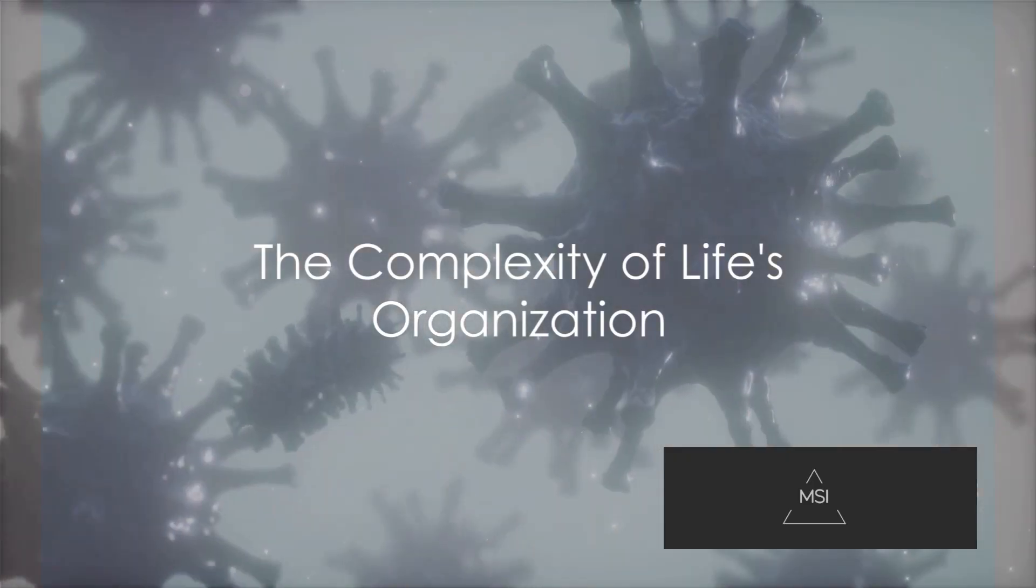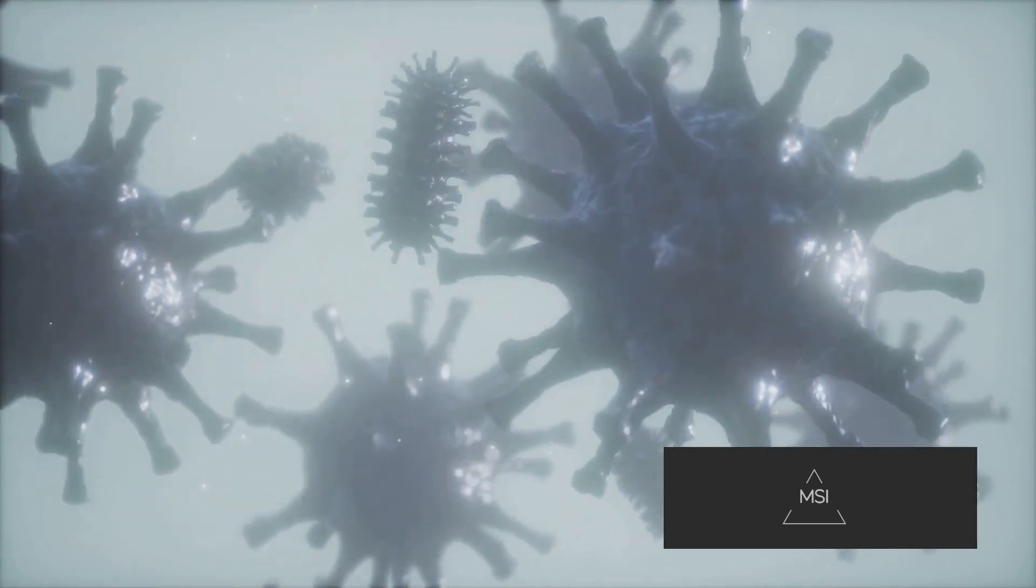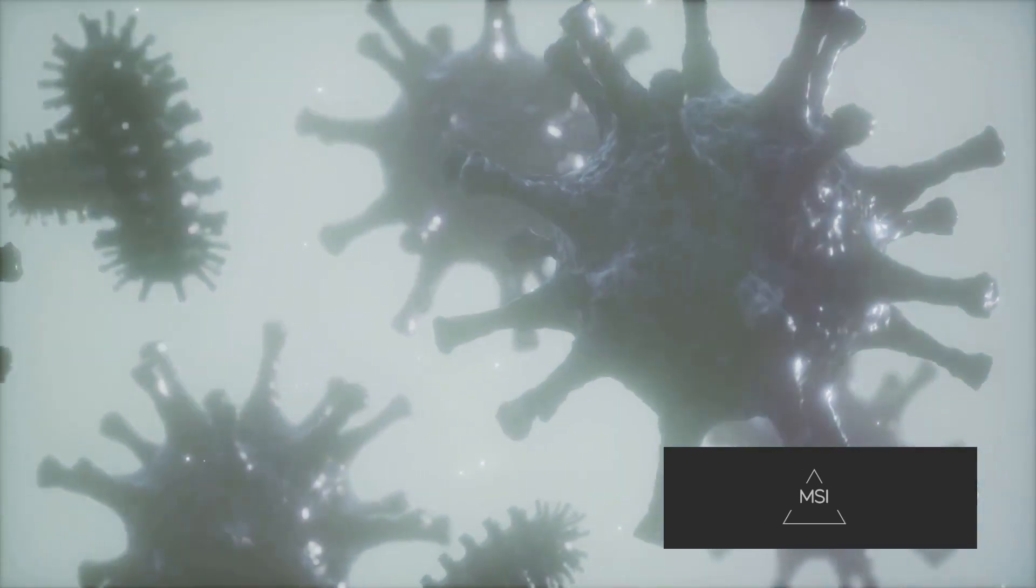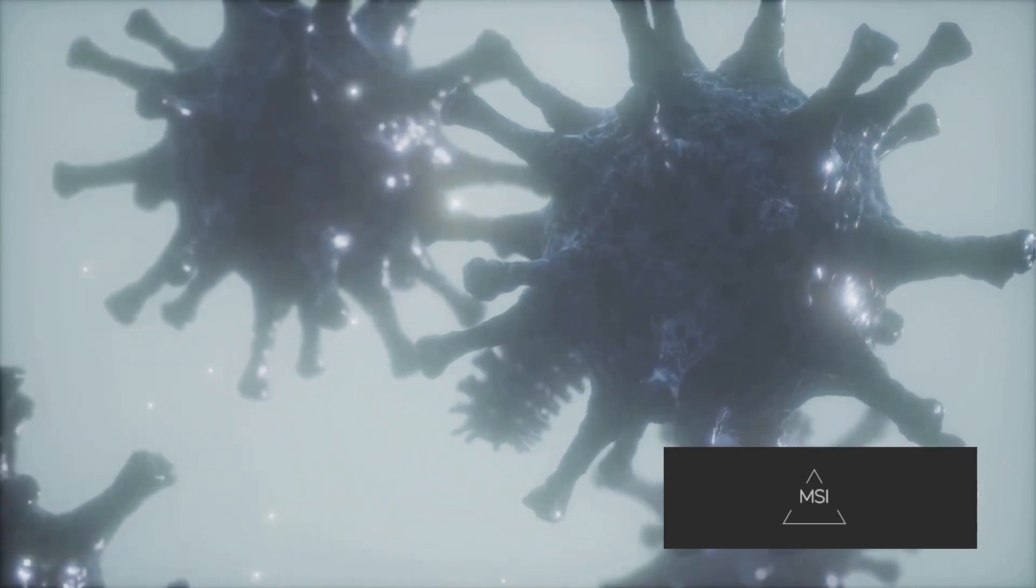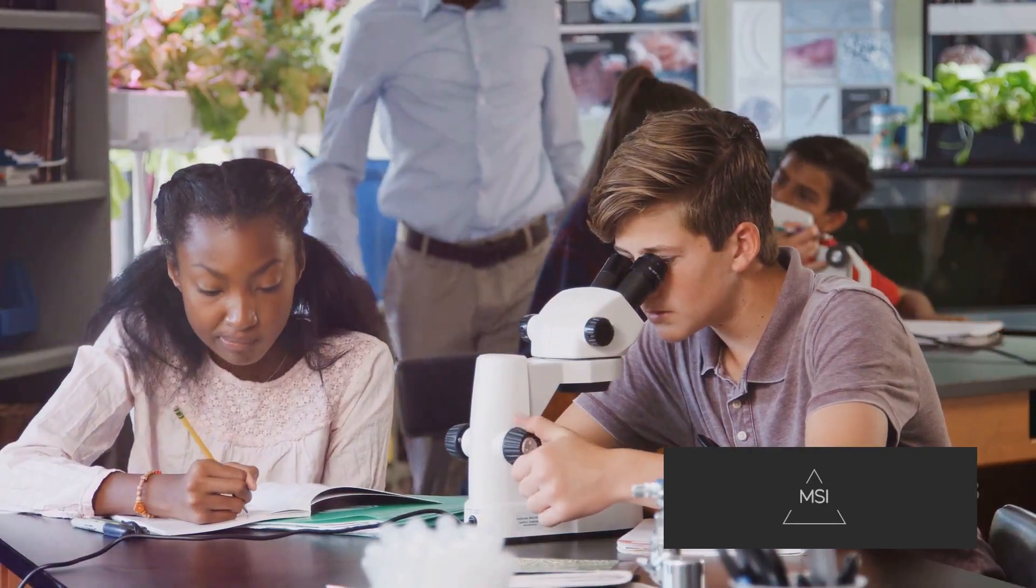To summarize, the biological hierarchy is a beautifully complex ladder of life, starting from the building block of the cell and culminating in the all-encompassing biosphere. Each level up the ladder integrates the levels below, increasing in complexity and function.